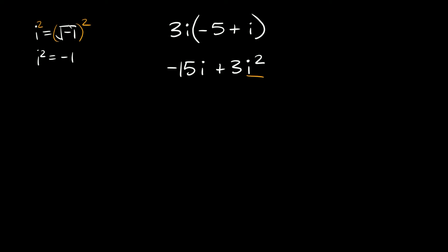And if that doesn't make sense, let's just use a normal number. So what is the square root of 9? If we squared this, this would just be equal to 9, because the square root of 9 is equal to 3, so really we just have 3 and we're squaring it. What's 3 squared equal to? Well that's just equal to 9. So when you square a square root they basically cancel each other out and you're just left with the number inside. So same thing up here — that squared exponent and the square root just cancel each other out and we're left with negative 1.